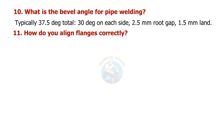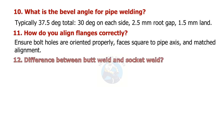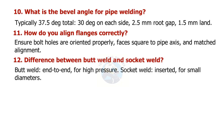How do you align flanges correctly? Ensure bolt holes are oriented properly, faces are square to the pipe axis, and matched alignment. What is the difference between butt weld and socket weld? Butt weld is end-to-end for high pressure. Socket weld is inserted and used for small diameters.